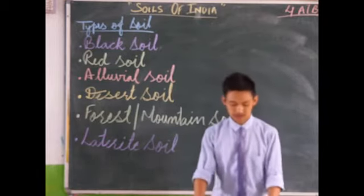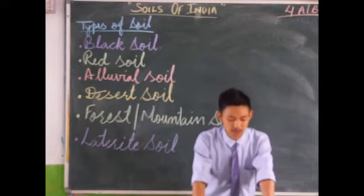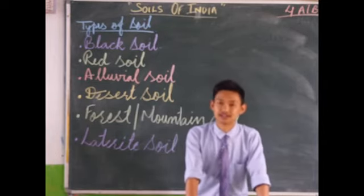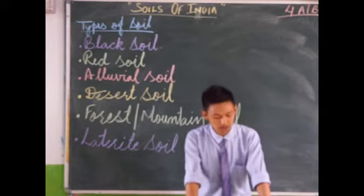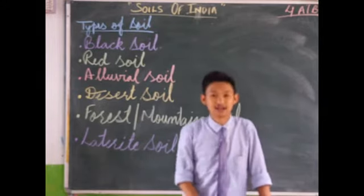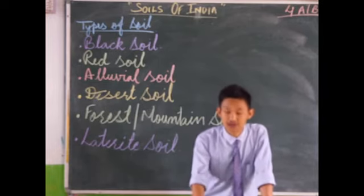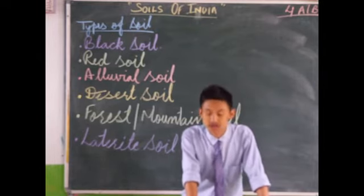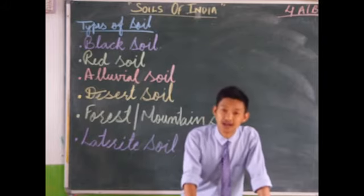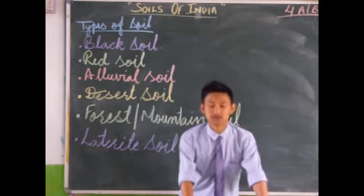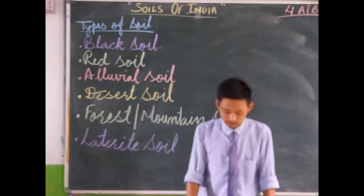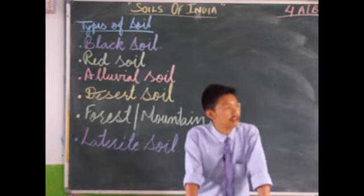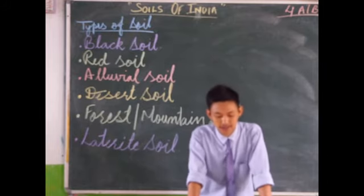The last type is laterite soil. It is a mixture of red soil and clay, mostly found in regions with excessive rainfall. It has low humus content and is rich in iron and aluminum. It is yellowish-brown in color. It is found in western Ghats and parts of Tamil Nadu, Karnataka, Kerala, Odisha, Assam, West Bengal, Meghalaya, and Telangana. Crops like rubber, cotton, groundnut, cashew, spices, tea, coffee, and tobacco can be grown in this soil.